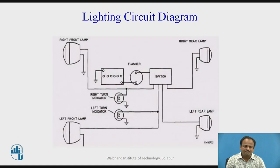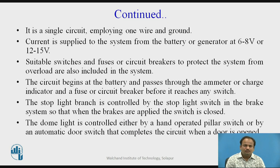This is the lighting circuit diagram, in which the right front lamp, left front lamp, right turn indicator, left turn indicator, flasher unit, switch for flasher, right rear lamp, and left rear lamp are shown. This lighting circuit is a single circuit employing one wire and ground. Current is applied to the system from the battery or generator at 6 to 8 volts or 12 to 15 volts.